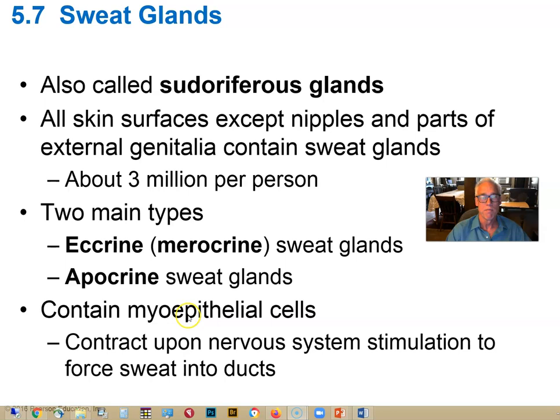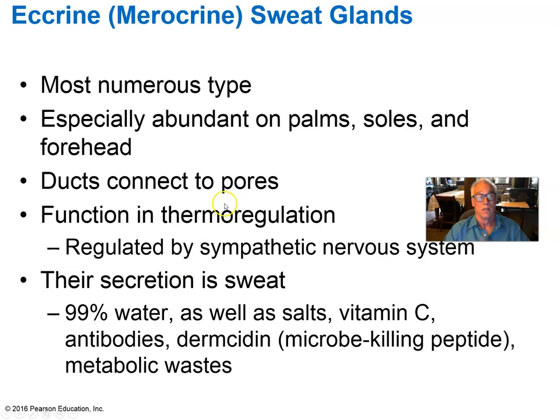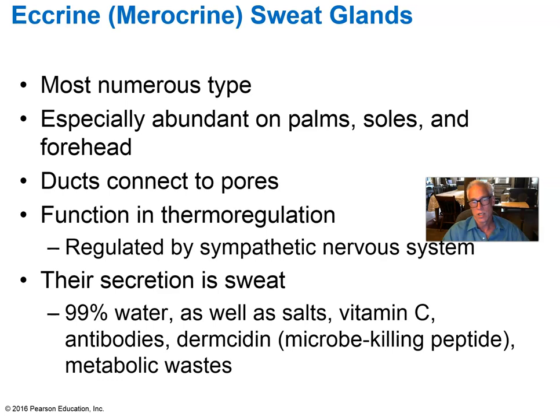Glands interestingly contain myoepithelial cells that can help pump the secretion out into the ducts to improve delivery onto the surface of the body. Eccrine sweat glands have a merocrine secretion mechanism and are important in thermal regulation. As water molecules evaporate from the surface of the body, we take heat with them — the heat of vaporization — that helps cool the body.